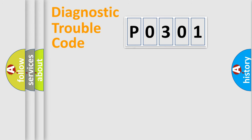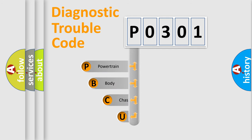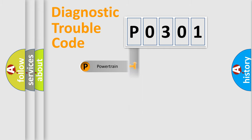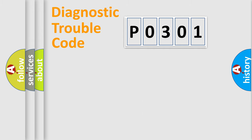Let's look at the history of diagnostic fault code composition according to the OBD2 protocol, which is unified for all automakers since 2000. We divide the electric system of automobile into four basic units: Powertrain, Body, Chassis, and Network. This distribution is defined in the first character of the code.